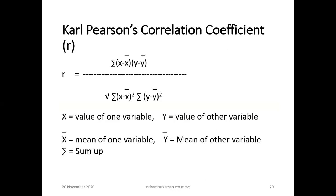In this formula, x means the value of one variable, y means the value of another variable, x-bar means the mean of one variable, y-bar means the mean of the other variable. The Karl Pearson correlation coefficient is suitable for quantitative data.